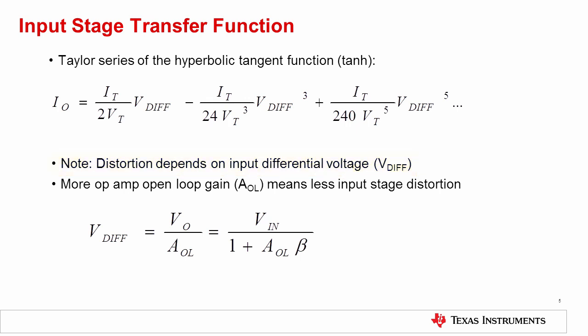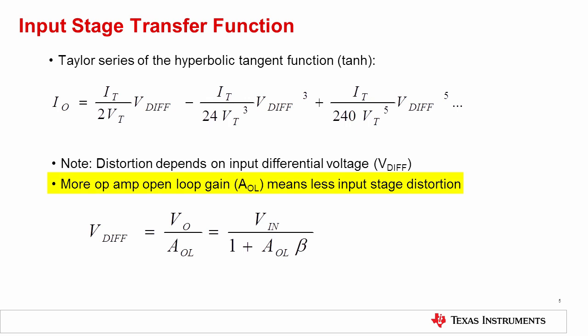So, how do we minimize the differential input voltage? The differential input of an op amp is equal to the output voltage divided by the open-loop voltage gain. The differential input can also be expressed as the input signal divided by 1 plus AOL multiplied by the feedback factor beta. Therefore, op amps with greater open-loop gain will have less distortion from their input stage because their differential input voltage is smaller.